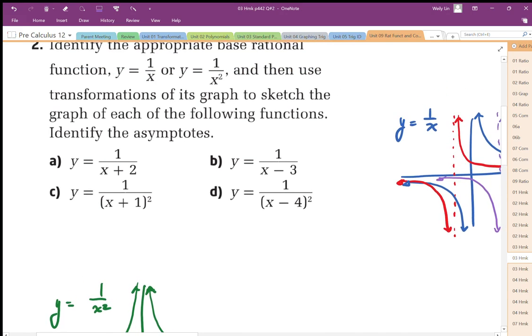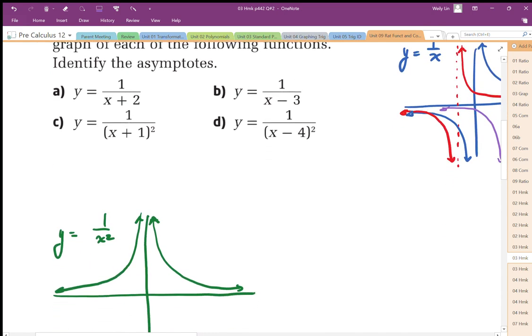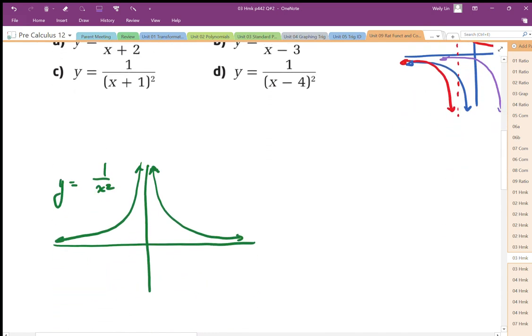For parts c and d, the base function is 1 over x squared, the one shown here in green.